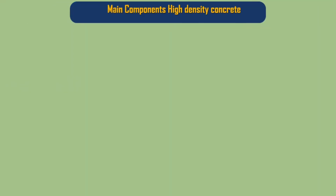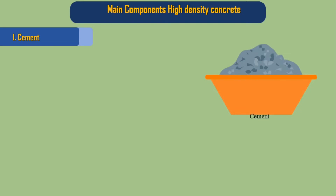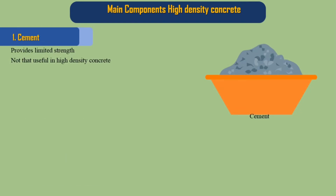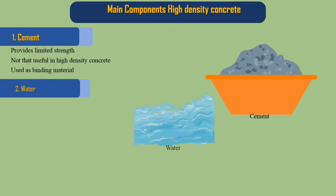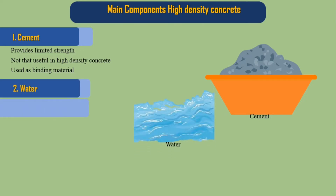The main components of high density concrete are: 1. Cement — provides limited strength, not that useful in high density concrete itself, but used as a binding material. 2. Water. 3. Aggregates.